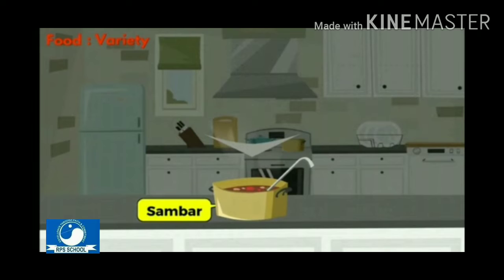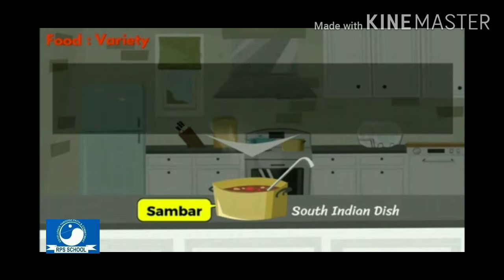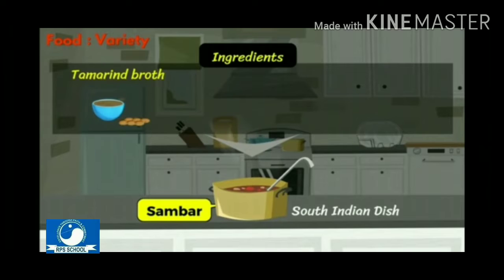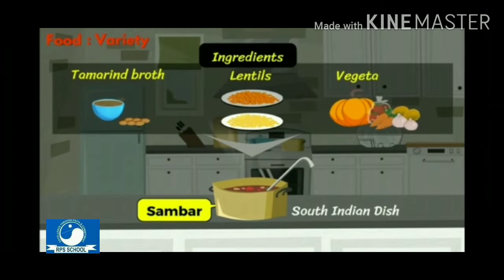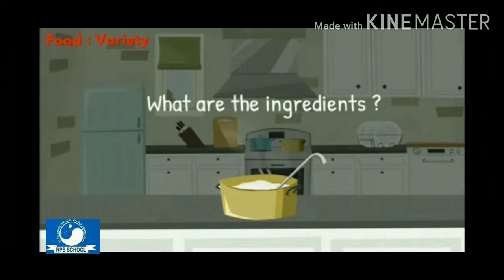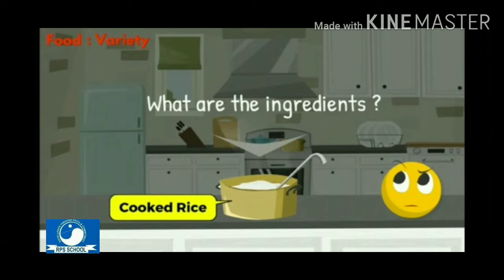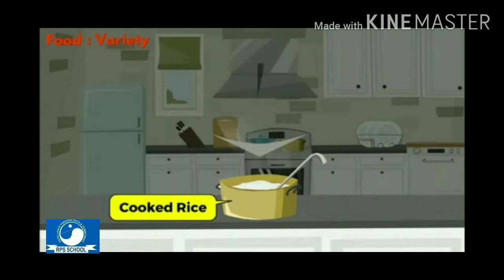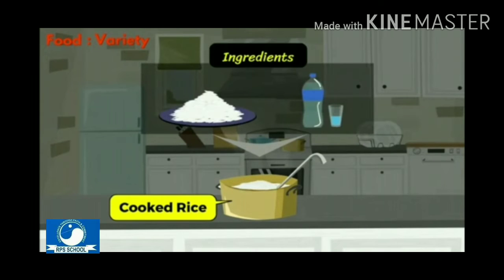Sambar is a famous South Indian dish. The main ingredients of this dish are tamarind root, lentils and vegetables. Can you tell me what are the ingredients of cooked rice? It just needs two ingredients: raw rice and water.